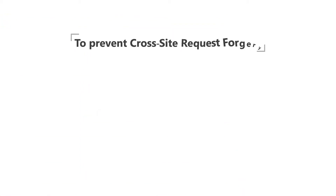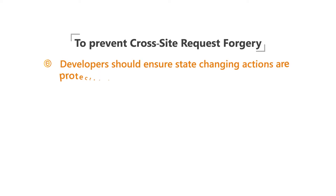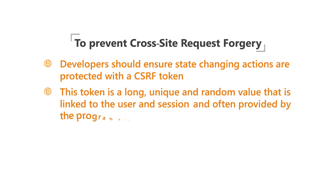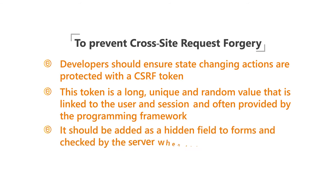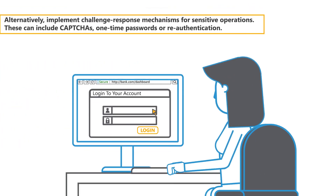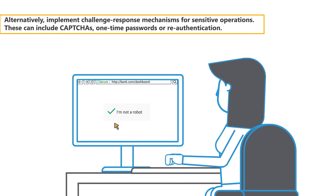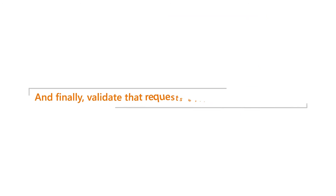To prevent cross-site request forgery, developers should ensure state-changing actions are protected with a CSRF token. This token is a long, unique, and random value that is linked to the user in session and often provided by the programming framework. It should be added as a hidden field to forms and checked by the server when submitted. Alternatively, implement challenge-response mechanisms for sensitive operations, which can include CAPTCHAs, one-time passwords, or re-authentication. Finally, validate that requests were intended by the user.